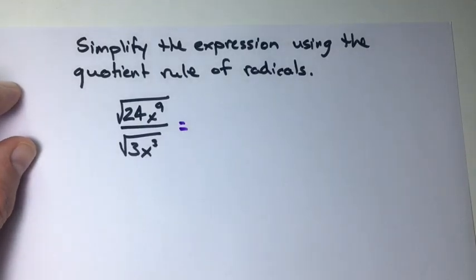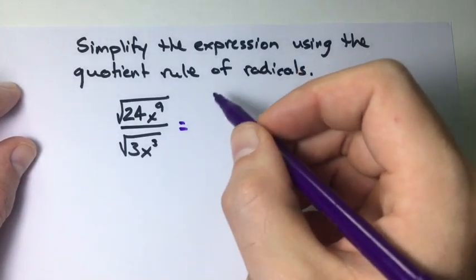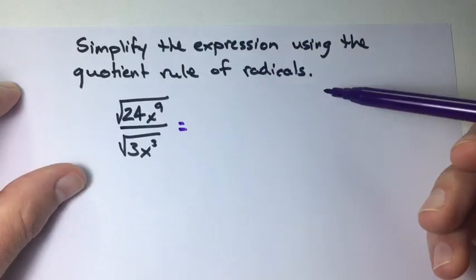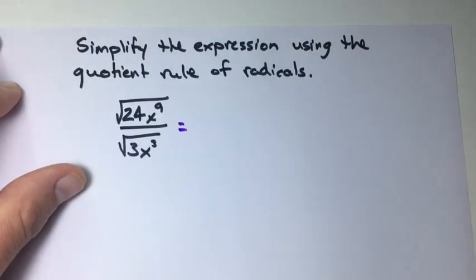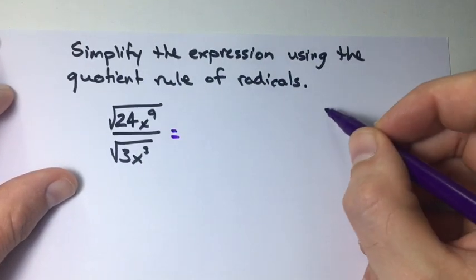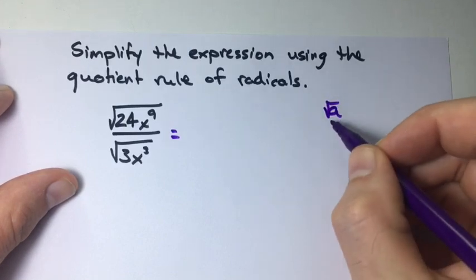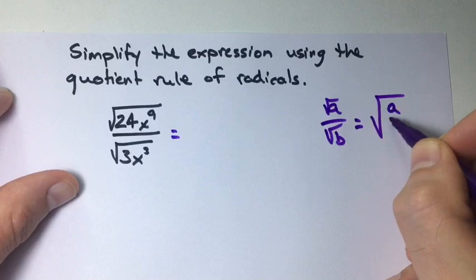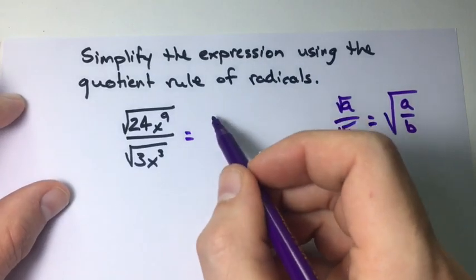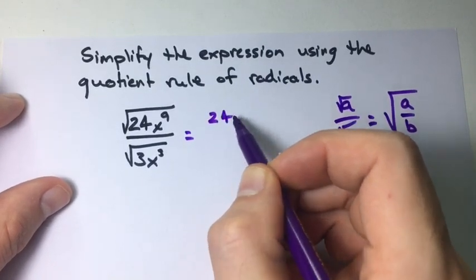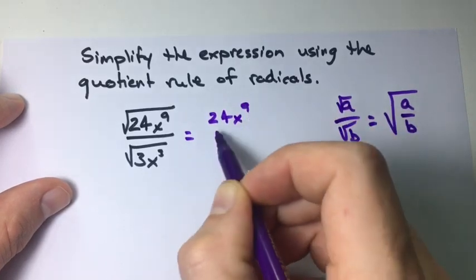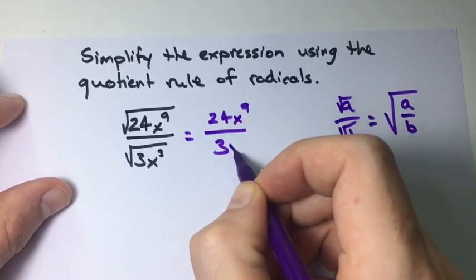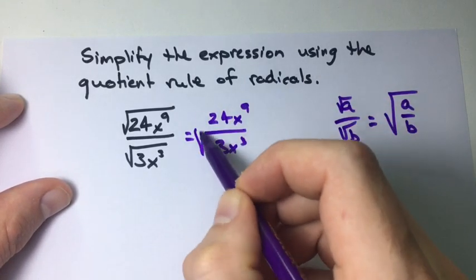So what I like to do first, let's just put them all under one big radical because we know the quotient rule for radicals says that the square root of a over the square root of b equals square root of a over b. So 24x to the power of 9 over 3x to the power of 3 all under one radical.